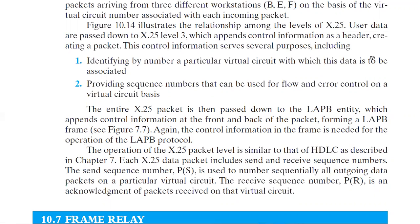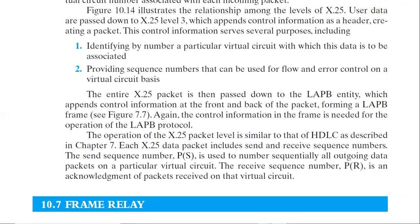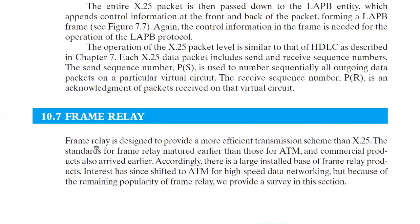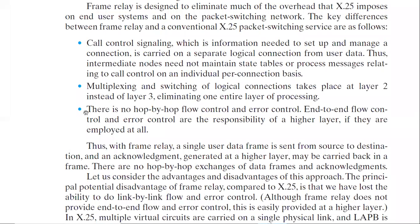Frame relay is similar to X.25 but more efficient. Frame relay standards matured earlier than those for ATM — asynchronous transfer mode. Frame relay is designed to eliminate the overhead that X.25 imposes on end-user systems and on the packet switching network. The key differences between frame relay and X.25 include: call control signaling, which is the information needed to set up and manage a connection.